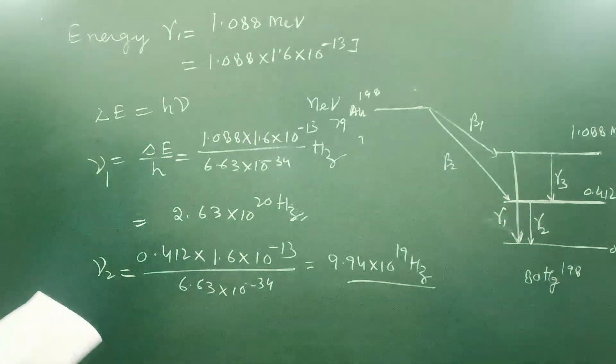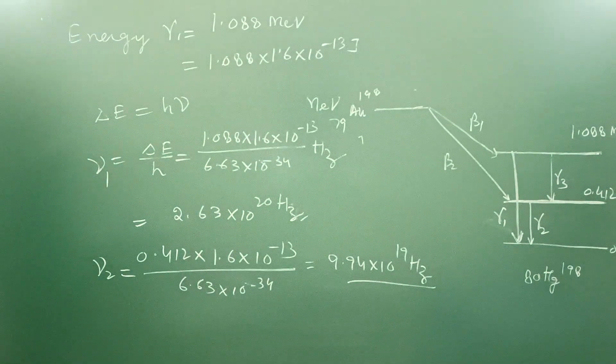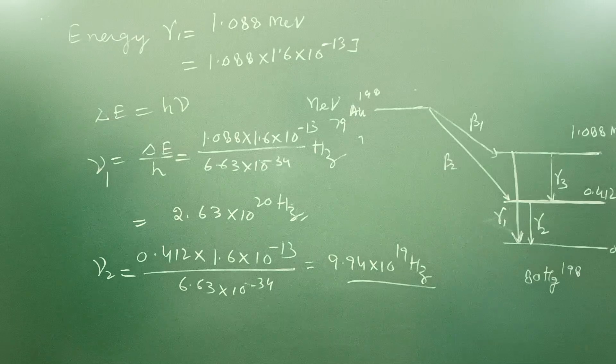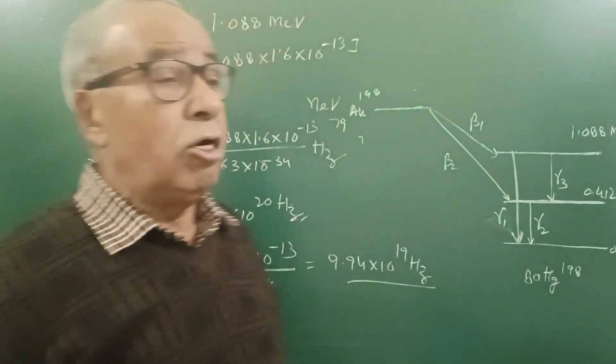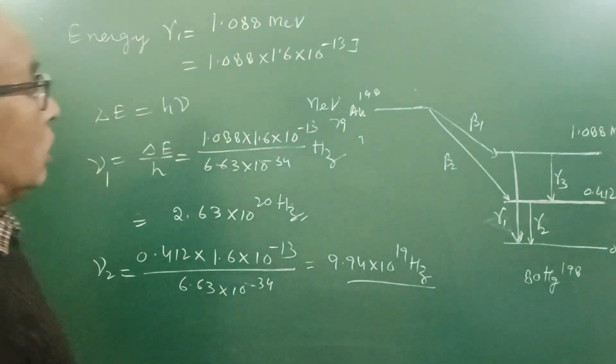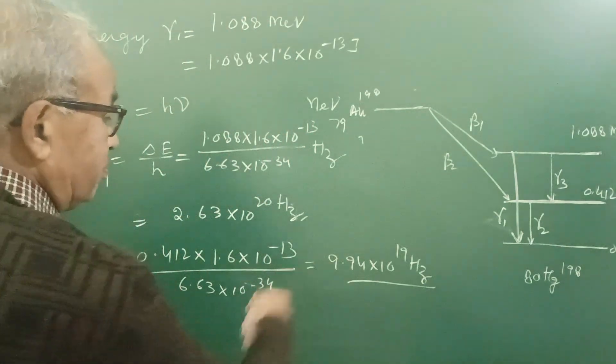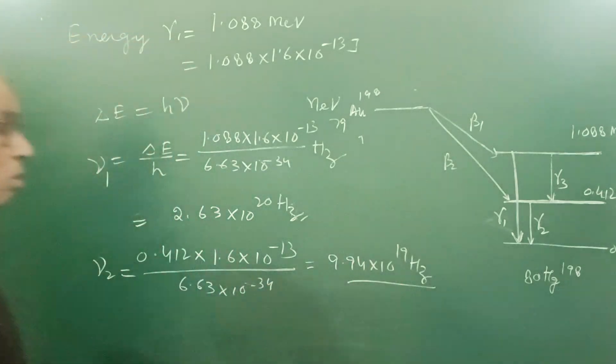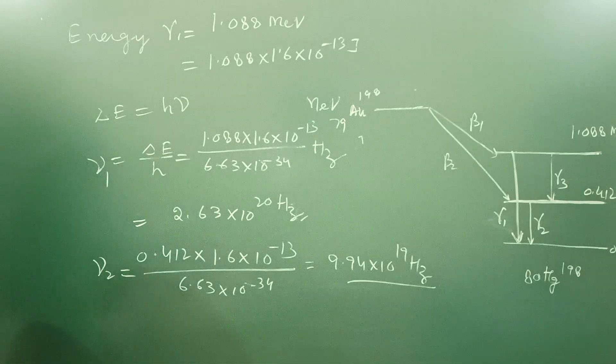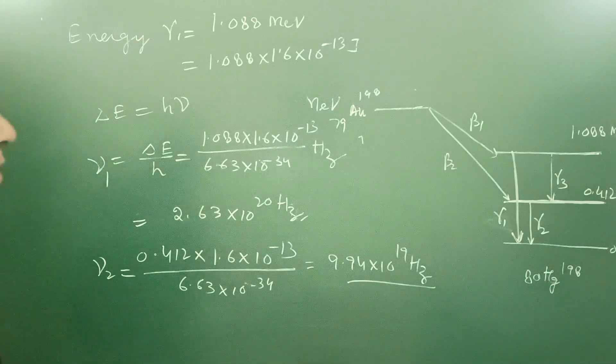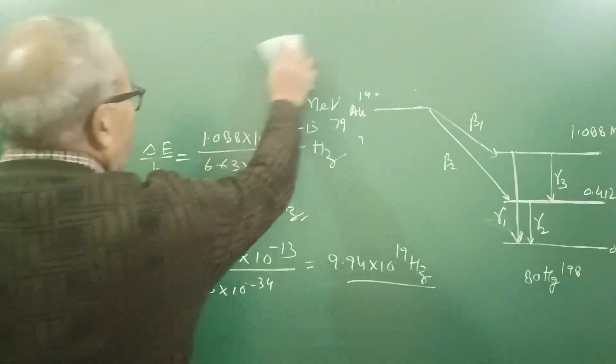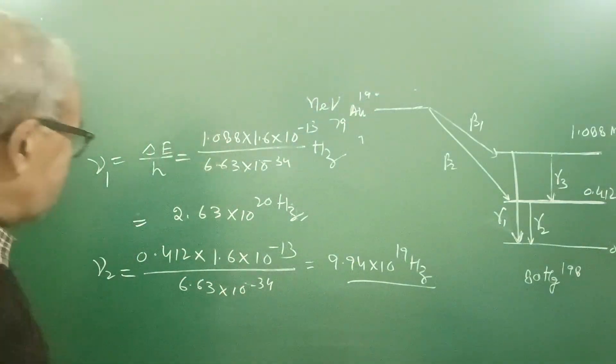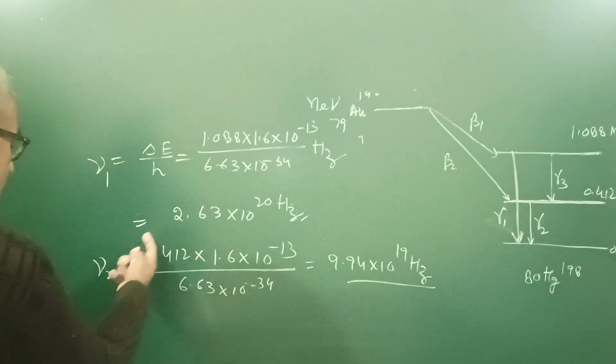These are the frequency ranges of gamma rays. Frequency range of visible light will be 10 to the power 14 hertz, X-ray 10 to the power 16 to 18 hertz. There is no well-defined boundary between X-rays and gamma rays, but the energy of gamma rays is higher.